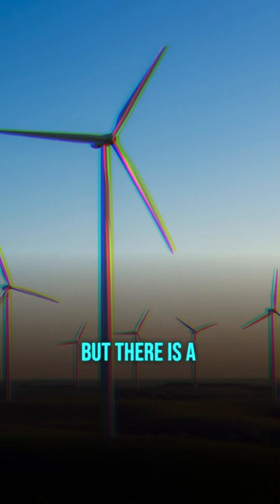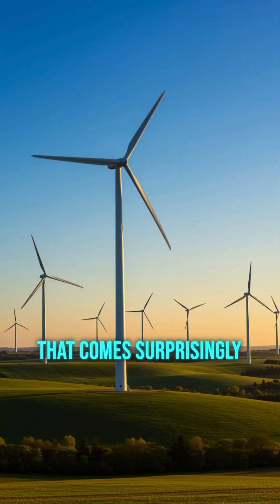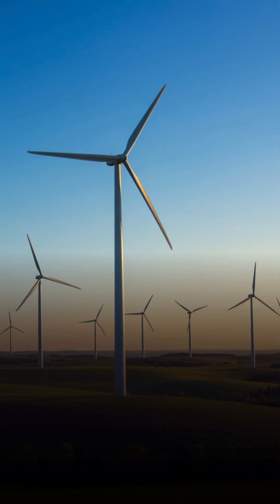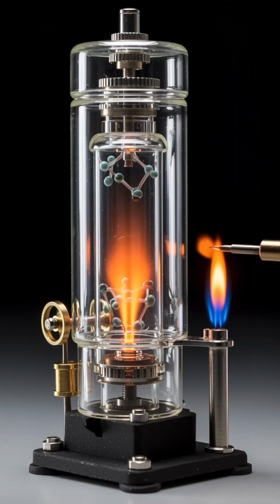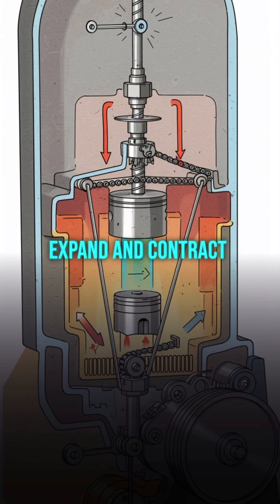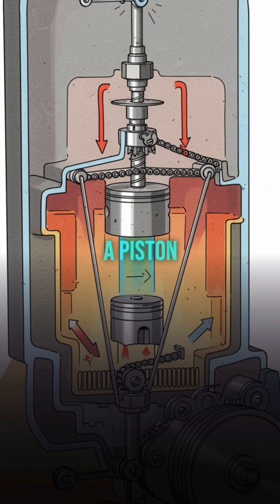But there is a real technology that comes surprisingly close to the dream of clean, endless motion: the Stirling engine. Invented in 1816, it works by heating and cooling a sealed gas, causing it to expand and contract, which drives a piston.